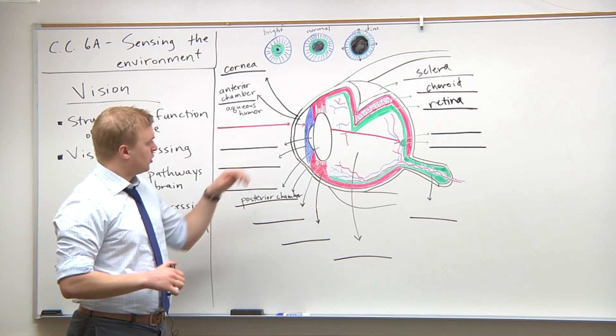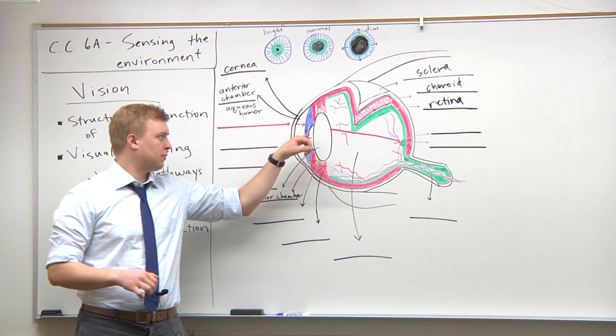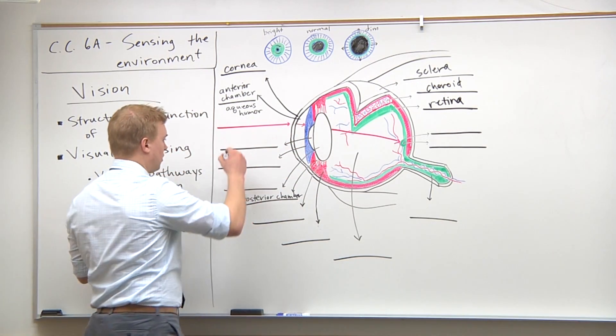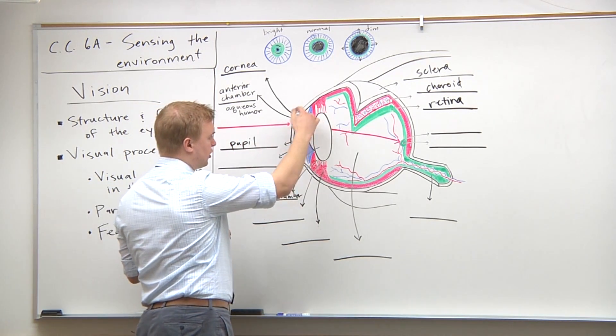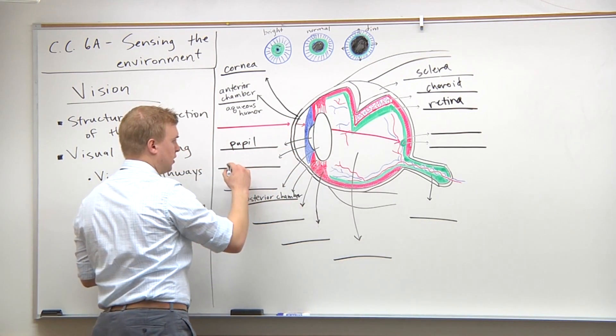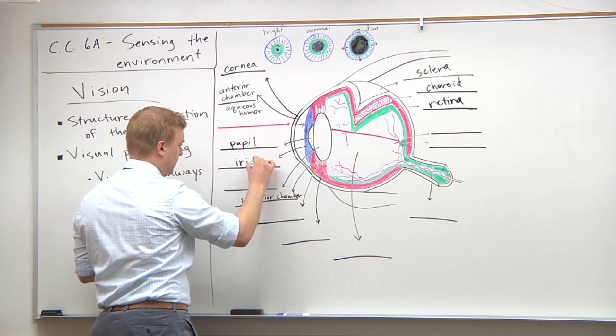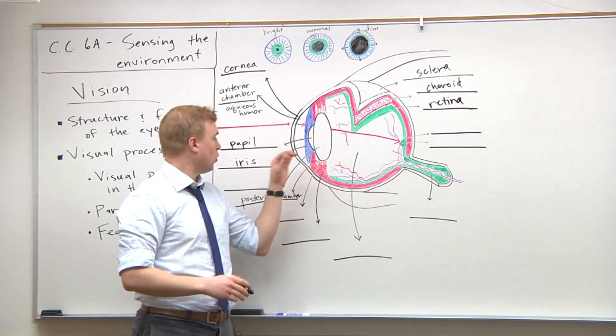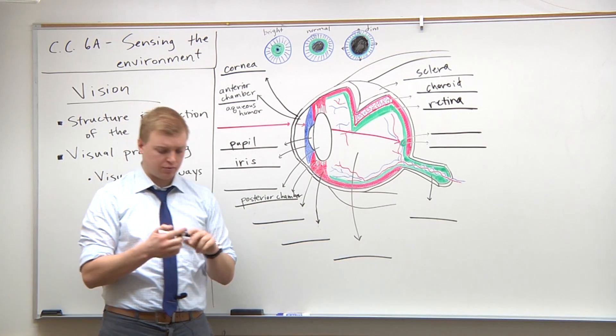Now we go through the middle of the eye. After the anterior chamber, what's the middle dark part called? Good, the pupil. The pupil is regulated by circular muscular tissue around it, known as the iris. The iris regulates the size of the pupil using two different kinds of muscles.